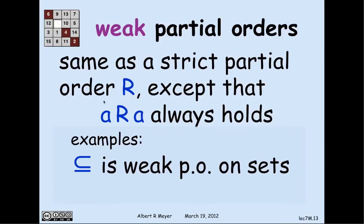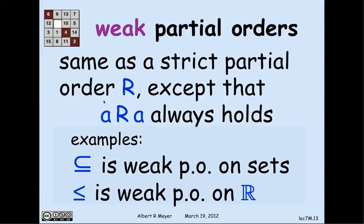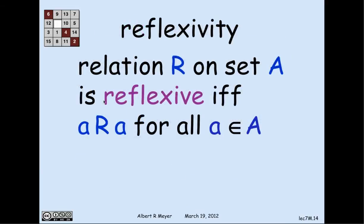An example is the less-than-or-equal-to relation, or the improper containment relation — the ordinary subset relation on sets — where a is a subset of a (not necessarily a proper subset). Less-than-or-equal-to, with the bar under the less-than sign indicating equality is also a possibility, gives a weak partial order on the real numbers. The property that distinguishes weak from strict is reflexivity: a relation R on a set is reflexive if every element is related to itself — if and only if a R a for all a in the domain A.